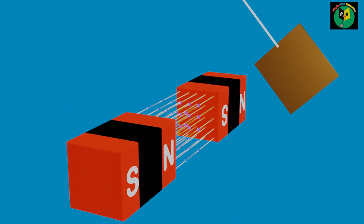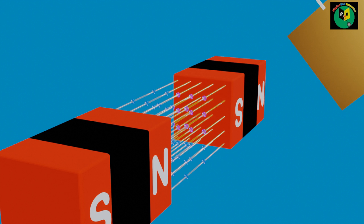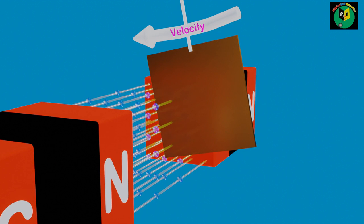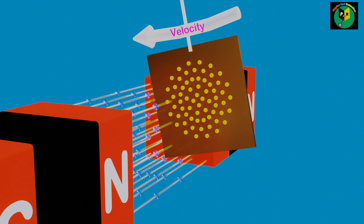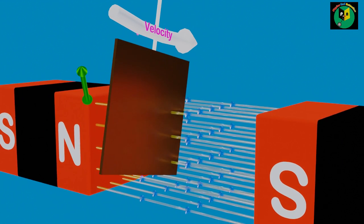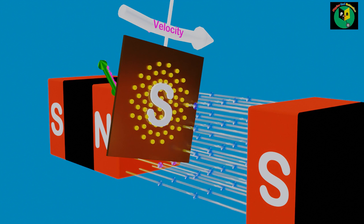Now let's again oscillate the metallic plate and observe it closely to understand the reason for damping. When the metallic plate enters a magnetic field, the magnetic flux linking to the plate surface changes. Hence, according to Lenz's law, to oppose this change of magnetic flux, Eddy Current starts flowing anti-clockwise on the surface facing the north pole and acts like a north pole to repel and oppose the motion of the plate. Meanwhile, Eddy Current flows in a clockwise direction on the surface facing the south pole, acting like a south pole to repel or oppose the entry of the plate into the magnetic field.